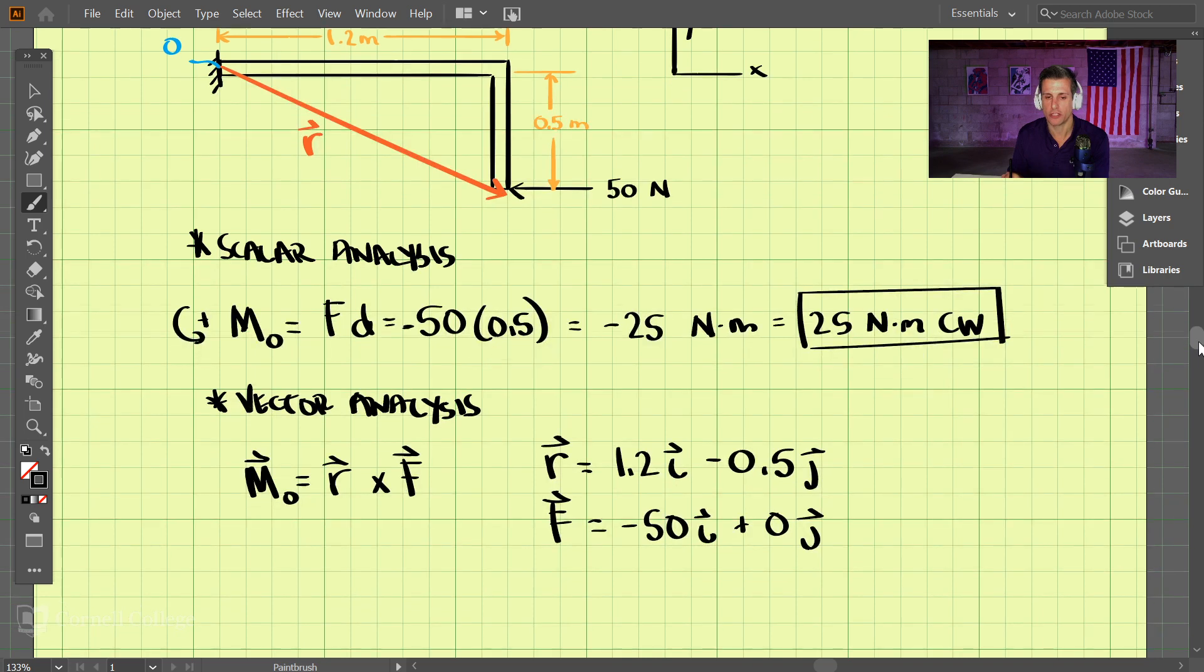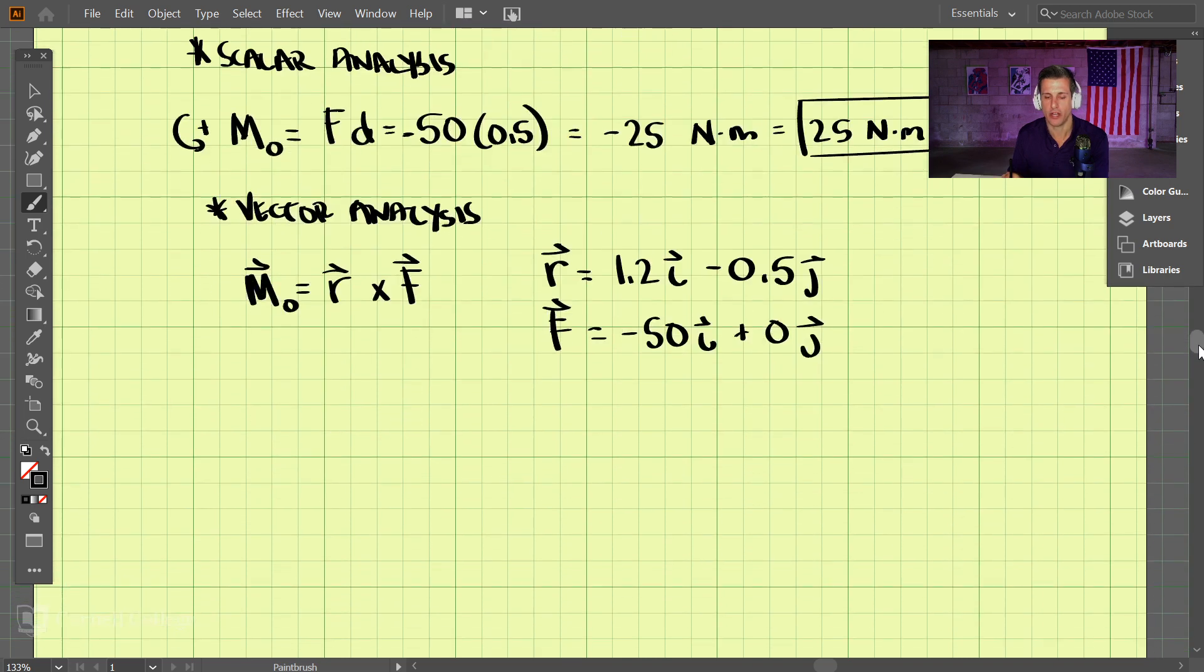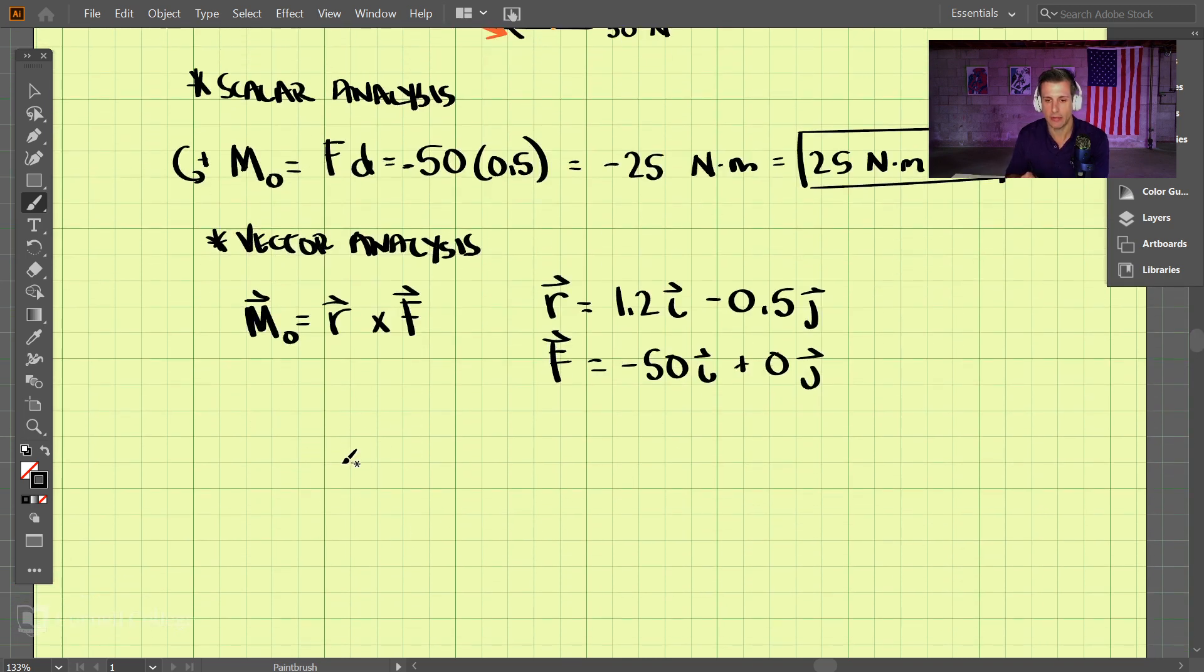Now let's perform the cross product, R cross F. I'll write our R vector and F vector using the table method. We have 1.2 and negative 0.5 for R, and negative 50 and 0 for F.